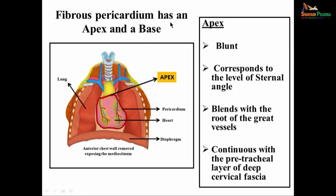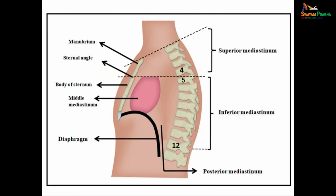The fibrous pericardium has got an apex and a base. The apex is blunt and corresponds to the level of the sternal angle of Louis. Above this, it blends with the root of the great vessels and is also continuous with the pretracheal layer of the deep cervical fascia — which has got different layers: the prevertebral layer, pretracheal layer, carotid sheath, et cetera. So this fibrous pericardium continues with the pretracheal layer of deep cervical fascia above.